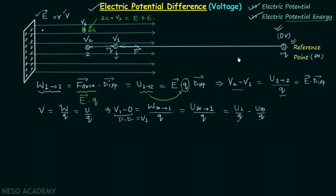The next point relates to shifting the reference point. If we shift or change the reference point, the potential difference will not change. For example, if the reference is shifted to a new position, the potentials at other points become V1-dash and V2-dash, but the potential difference V2-dash minus V1-dash remains equal to V2 minus V1. Potential difference never changes when you change the reference point.